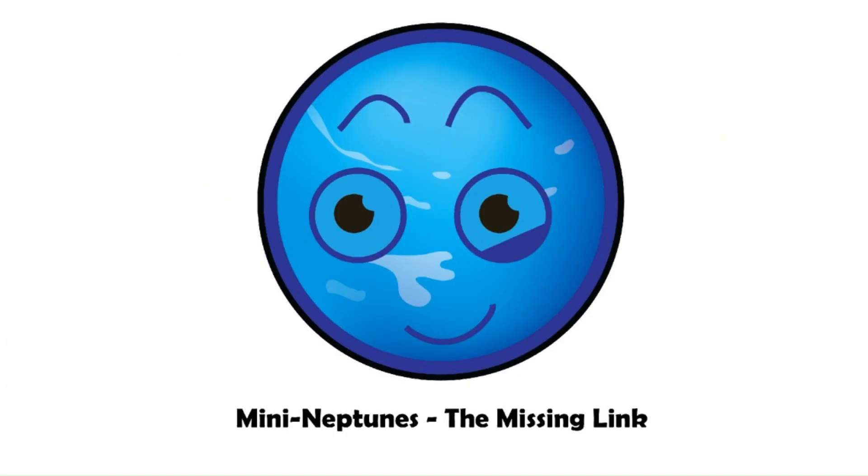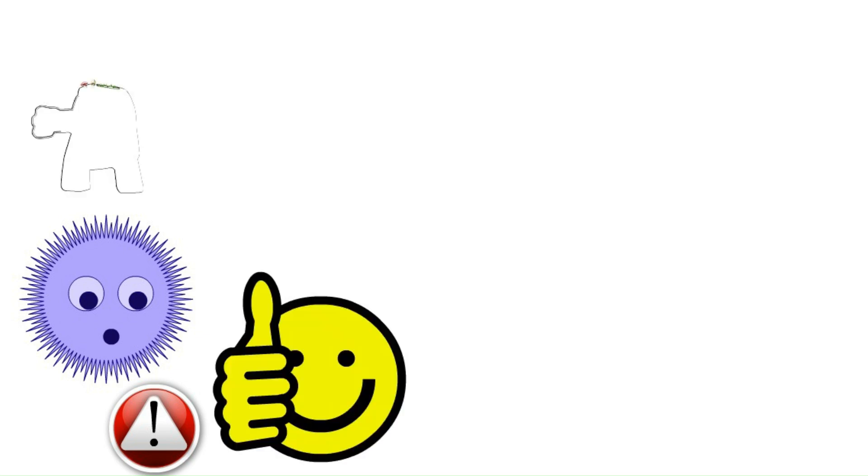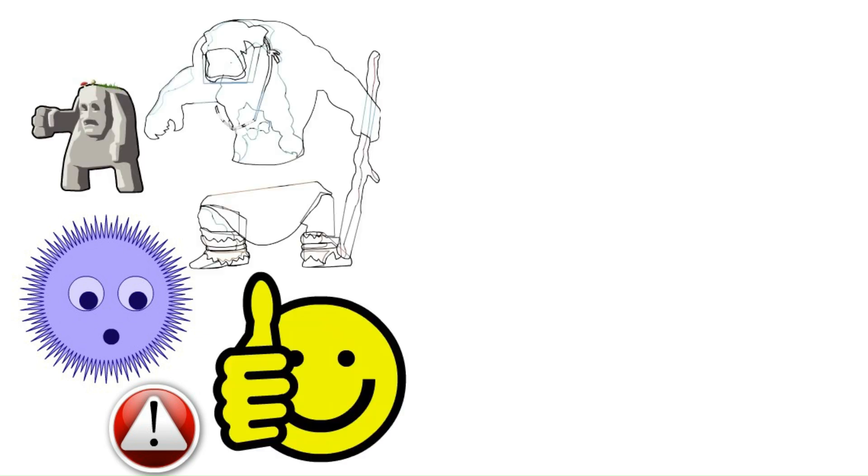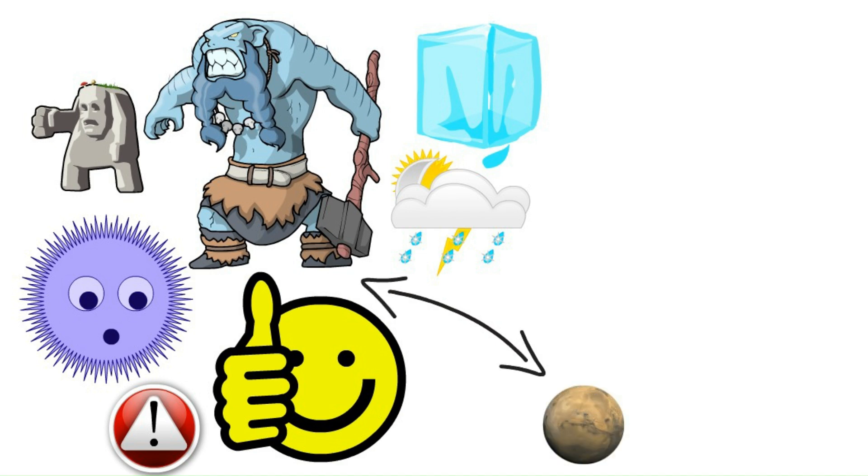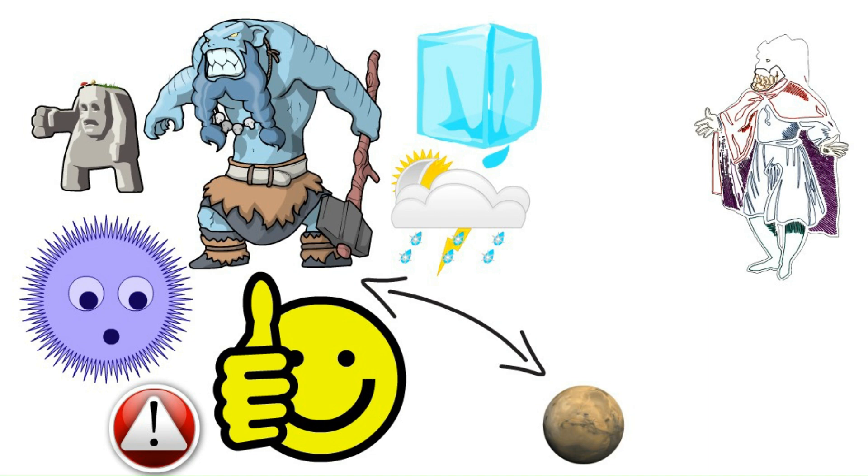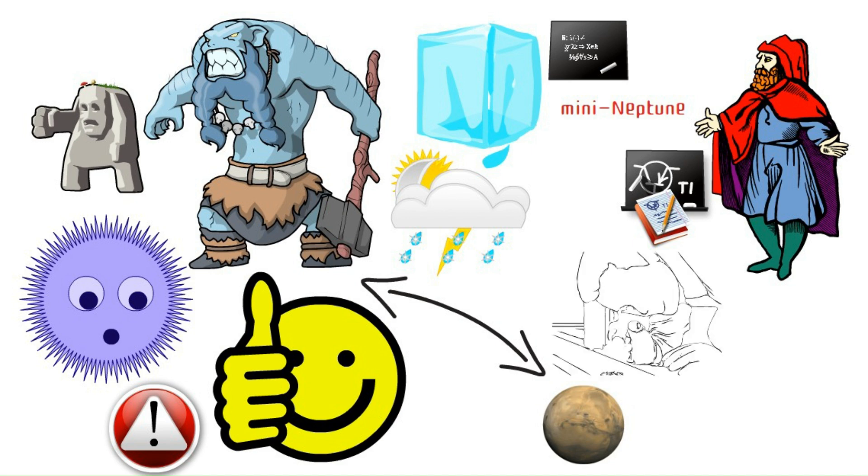Mini Neptunes, the missing link. Cosmic curiosities alert. Buckle up for Mini Neptunes, the pint-sized ice giants. Smaller than their big cousins, they pack a punch with thick, icy atmospheres. These weirdos might be the link between rocky super-Earths and full-blown ice giants. Imagine an ice giant that ditched the gym. That's a Mini Neptune. Studying their makeup could reveal clues about how planets were formed way back then, helping us solve the cosmic puzzle.